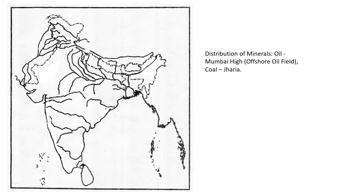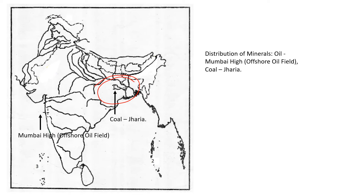Distribution of mineral oil. First, in that sea I have taken — that is in the middle of that typical Y shape — that is Damodar Valley. For coal, it is Jharia. Then the other one is Mumbai High, because Mumbai High is in the water — that is in the Arabian Sea. In the middle of that line from Krishna and Godavari rivers, in the middle of that line you find it, and then in the water you draw this Mumbai High.